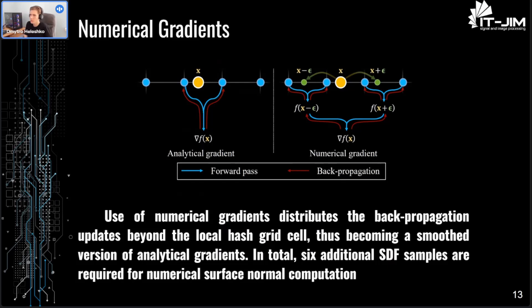On the downside, numerical gradients require sampling six more points. Given the point x_i, we sample six more points along the X, Y, and Z axes with some step size epsilon. On the bright side, it allows us to simultaneously update adjacent grid cells for any given point x, making it a smooth version of the analytical gradient.